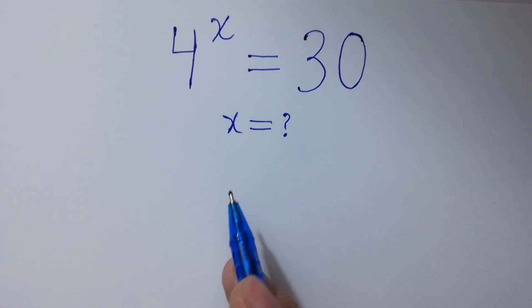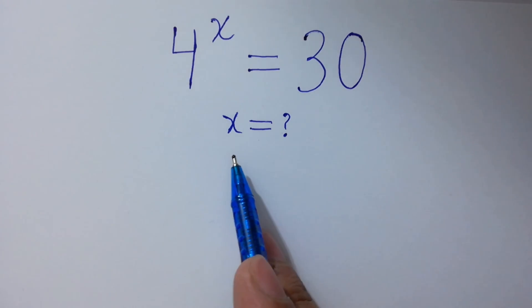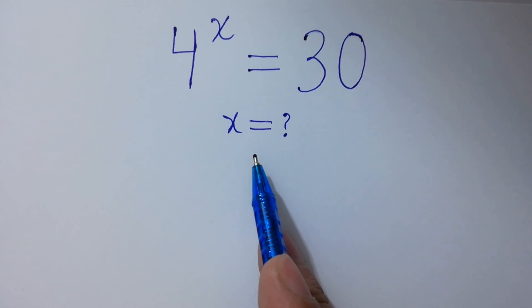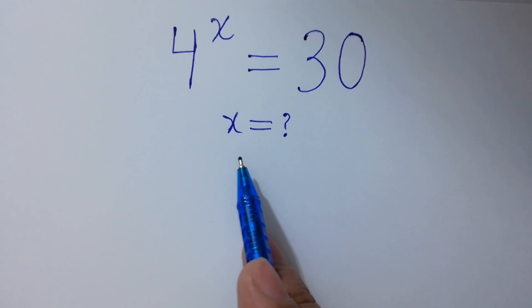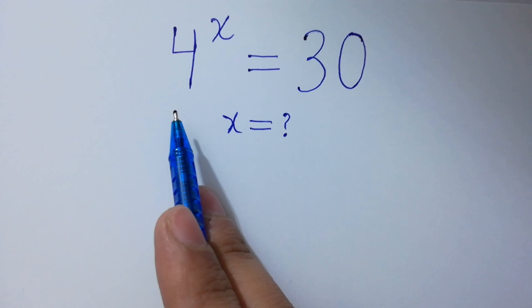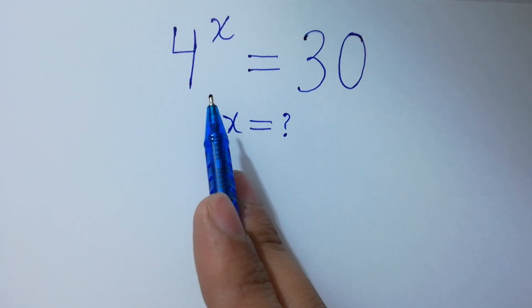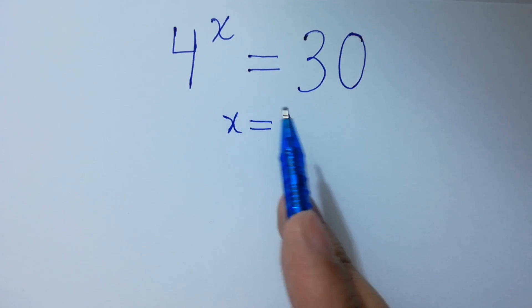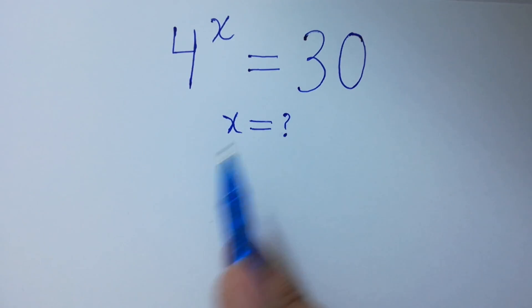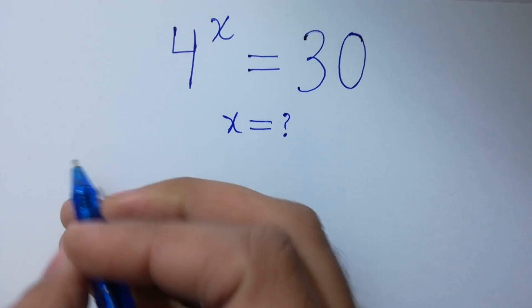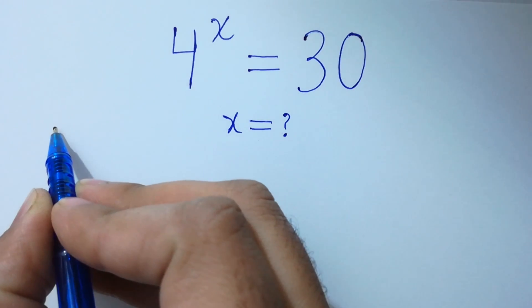Hello friends, find the value of x if 4 to the power x equals 30. Let's have a solution.